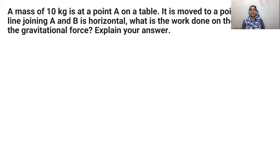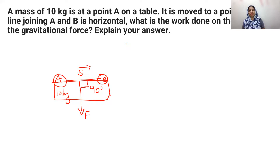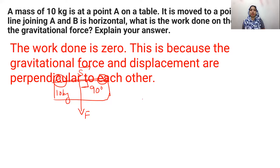Question five: a mass of 10 kg is at point A on a table and is moved to point B. The line joining AB is horizontal. What is the work done on the object by gravitational force? Since the displacement is horizontal and gravitational force always acts downward, force and displacement are perpendicular to each other. Therefore the work done by gravitational force is zero.